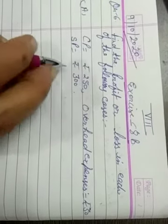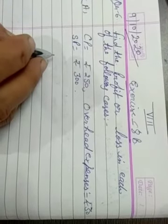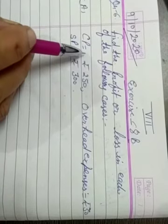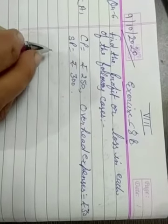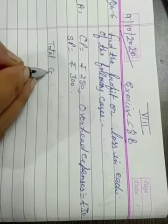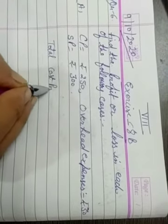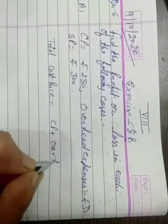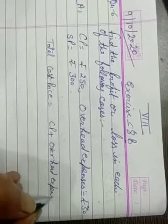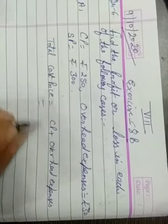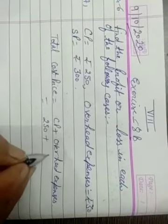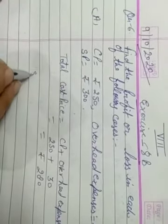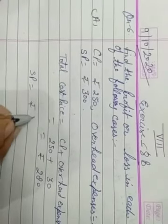Always overhead expenses add to cost price. Total cost price is equal to CP plus overhead expenses. CP 250, overhead expenses 30 is equal to Rs. 280. SP is equal to Rs. 300.